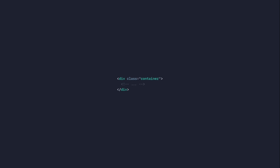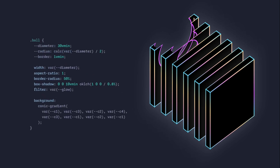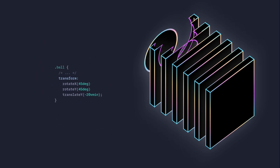The last thing we have to do is create the 3D sphere. I'm going to create a ball container with a ball element inside of it. For the ball container we're going to specify a grid and place the items in the center, position it absolutely with an inset of 0 pixels so it takes the entire width and height. We also want to move the ball container back by applying a transform with translateZ at minus 40vmin. We apply some basic styles to create a flat circle, specify a diameter and a radius together with a background. Then we apply another background layer — a black radial gradient with some space for the border. Finally we transform the ball in 3D space by rotating the x and y axes by 45 degrees and translating y by minus 20vmin.